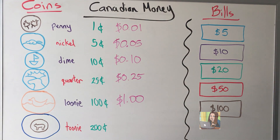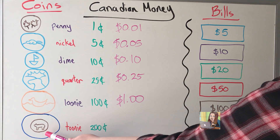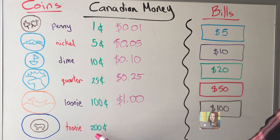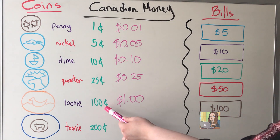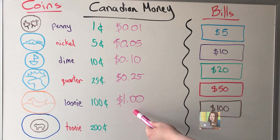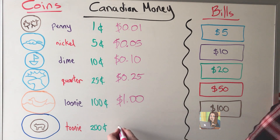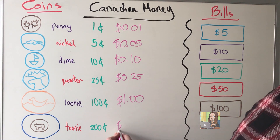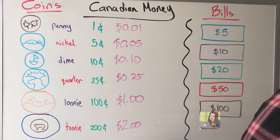And lastly, our toonie, with the polar bear on it, is worth 200 cents. And as we know, every 100 cents gives us one dollar, so 200 cents is going to give us two dollars.